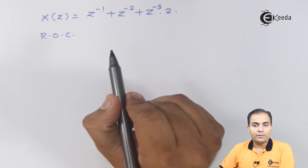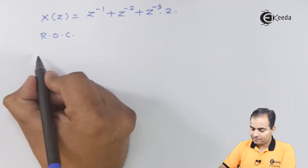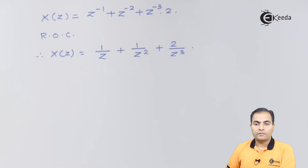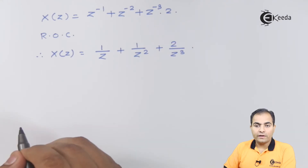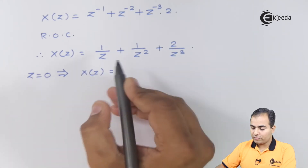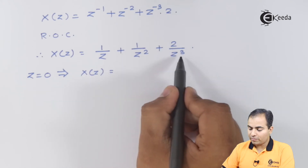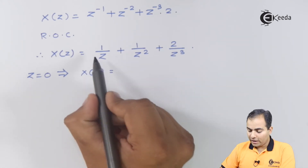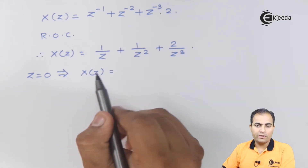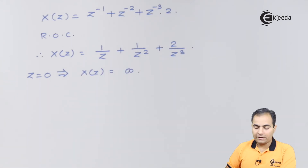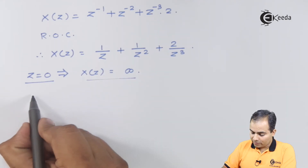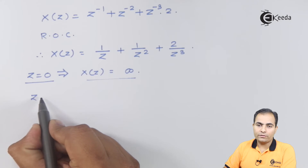Simply take the reciprocal so that all the orders become positive. Now substitute the values of z. If we substitute z equals zero, we get one over z, one over z squared, and one over z cubed — all these terms give infinity. So at z equals zero we get an infinite result. Now similarly, we substitute z equals infinity.